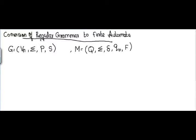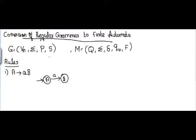Now I am going to explain the rules to convert regular grammar to finite automata, and then give one example. Suppose I have a production A tends to aB — that is, a small letter followed by a capital letter. I will draw a diagram where A is the present state, and if the input is 'a', the next state is B.